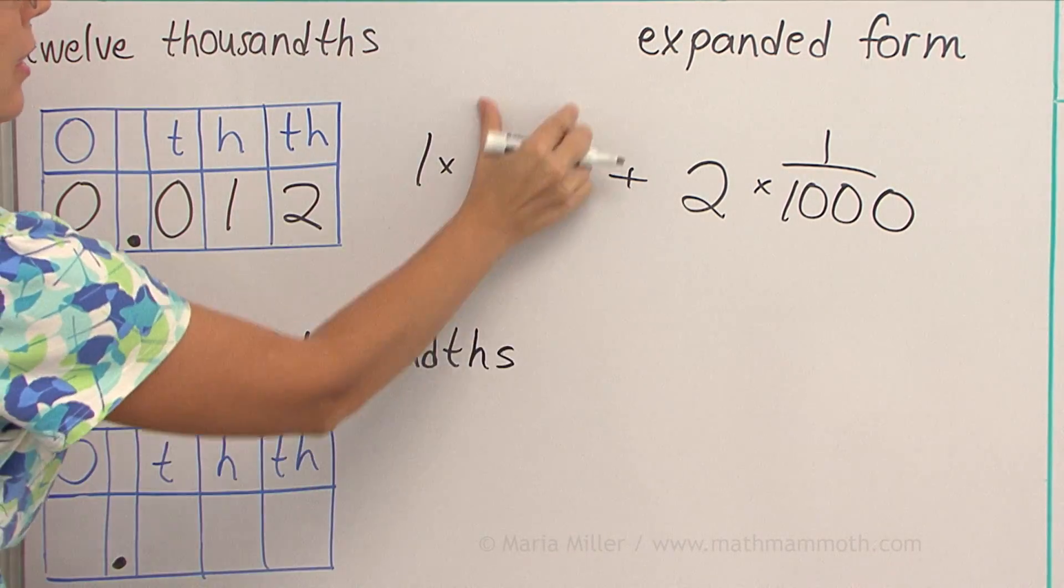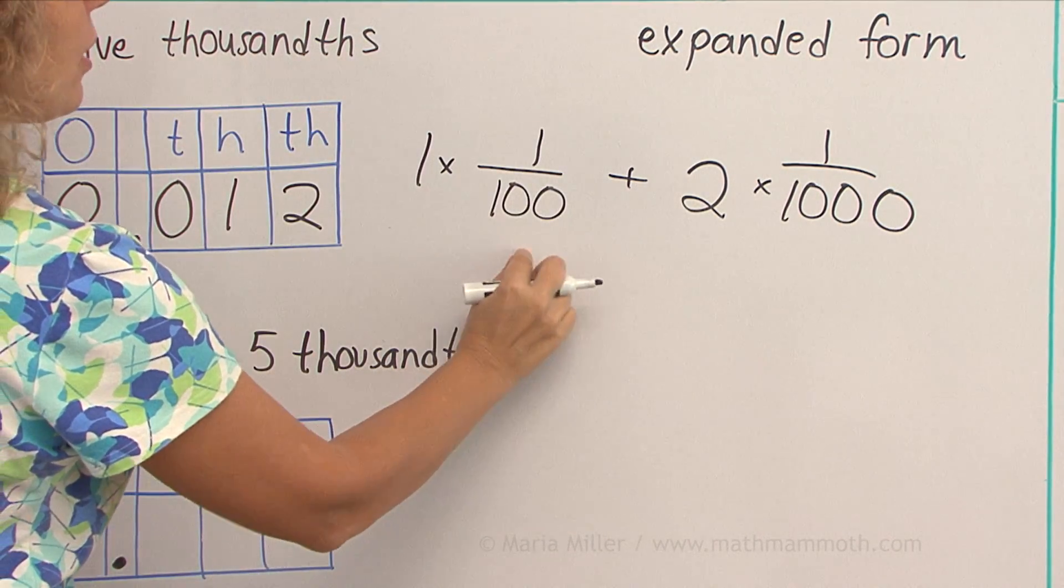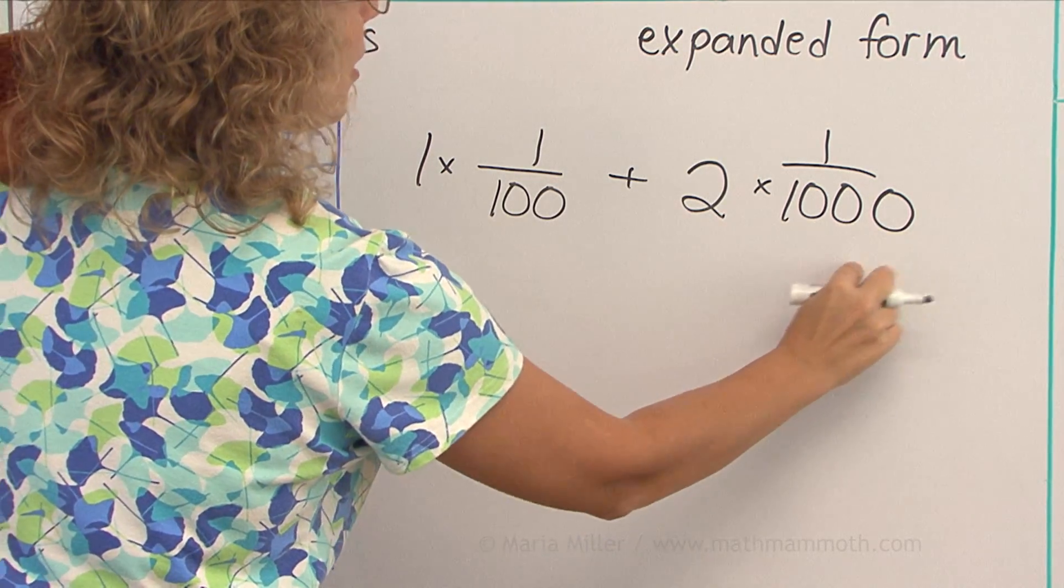You could also write this as a decimal, you know, 0.01, and this as a decimal, 0.001.